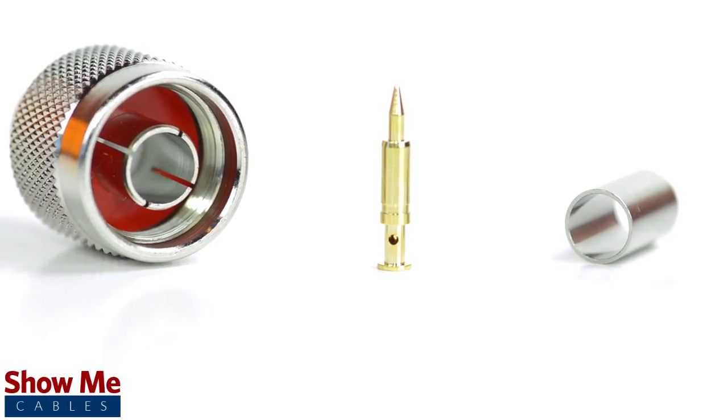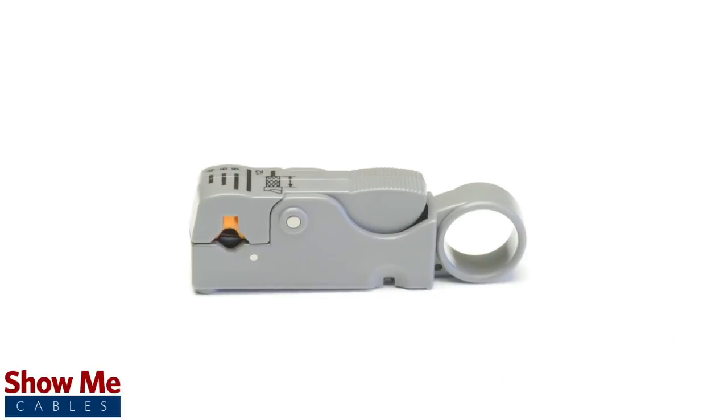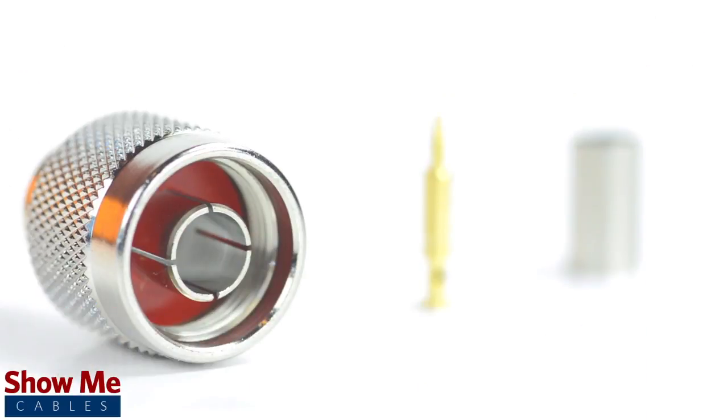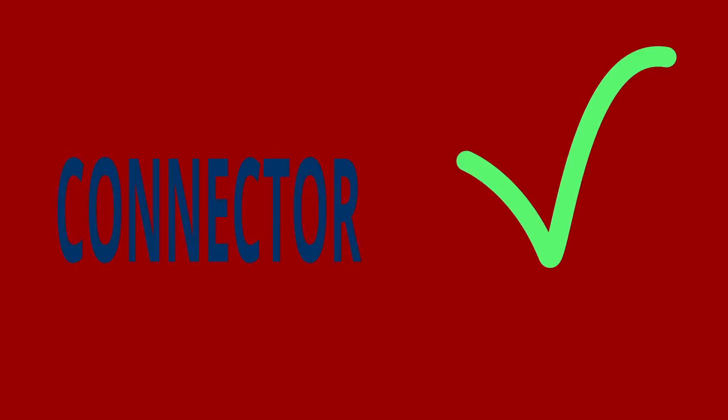For this installation you will need a coax stripper, coax cable, a soldering iron, a crimp tool, and the N type connector. Keep in mind that you will want to make sure that your coax stripper, crimp tool, and connector match the cable that you are installing.